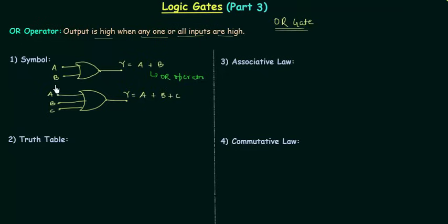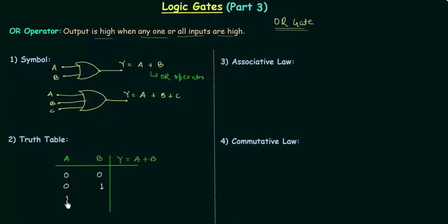This is all about the symbol for OR gate. Now we will move to the truth table, and I will take a two-input OR gate. A and B are the two inputs and Y is the output, equal to A OR B. As there are two inputs we will have four combinations. For the first combination, A equals 0 and B equals 0. From the definition, output is high when any one or all inputs are high, but here A is 0 and B is 0, so we don't have any input equal to 1, so output Y is going to be 0.